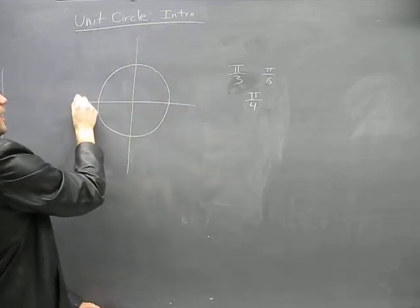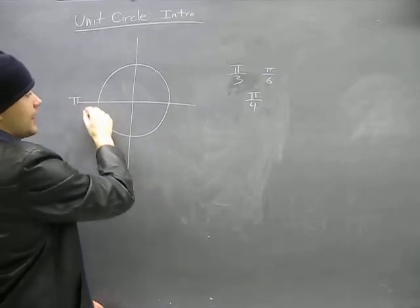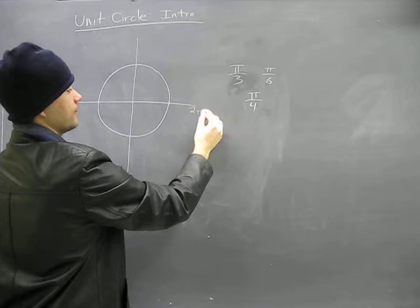Now, back to the circle here. Remember that at half a rotation, you're at pi radians, angular measure, and at all the way around, you're at 2 pi.